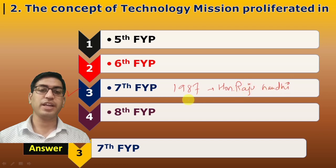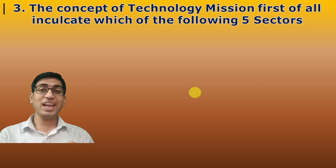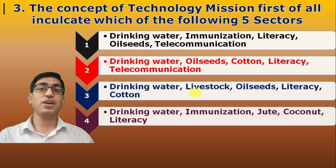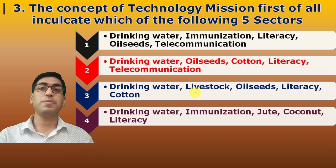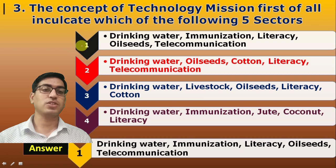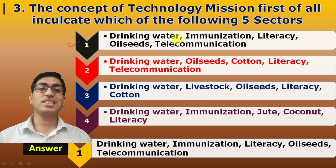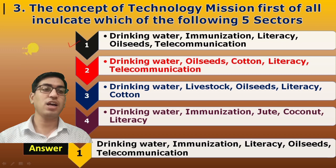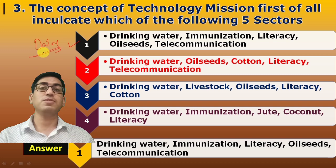Third question: The concept of technology missions first inculcated which five sectors? From 1987 onwards, when the concept started, there were five important sectors in which it was implemented: drinking water, immunization, literacy, oil seeds, and telecommunication. A sixth sector was later added — that is the dairy sector, covering dairy processing and dairy utilization.